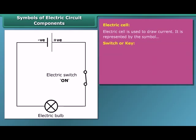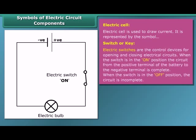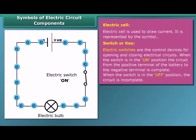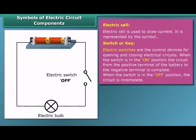A switch or key makes or breaks the connection in a circuit. When the switch is in the on position, the circuit is closed and the current flows throughout the circuit. When the switch is in the off position, the circuit is open and no current flows through the circuit.